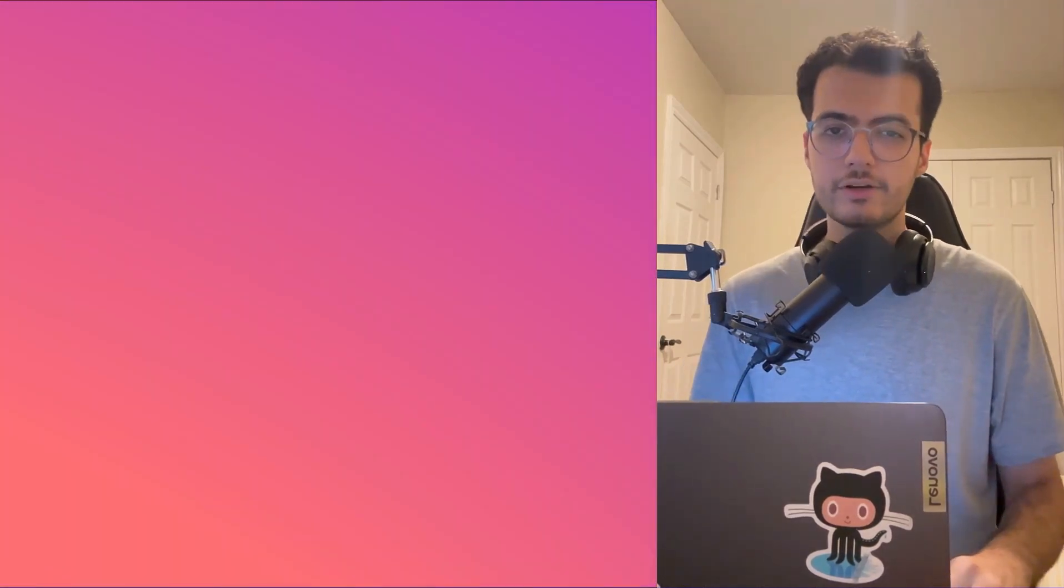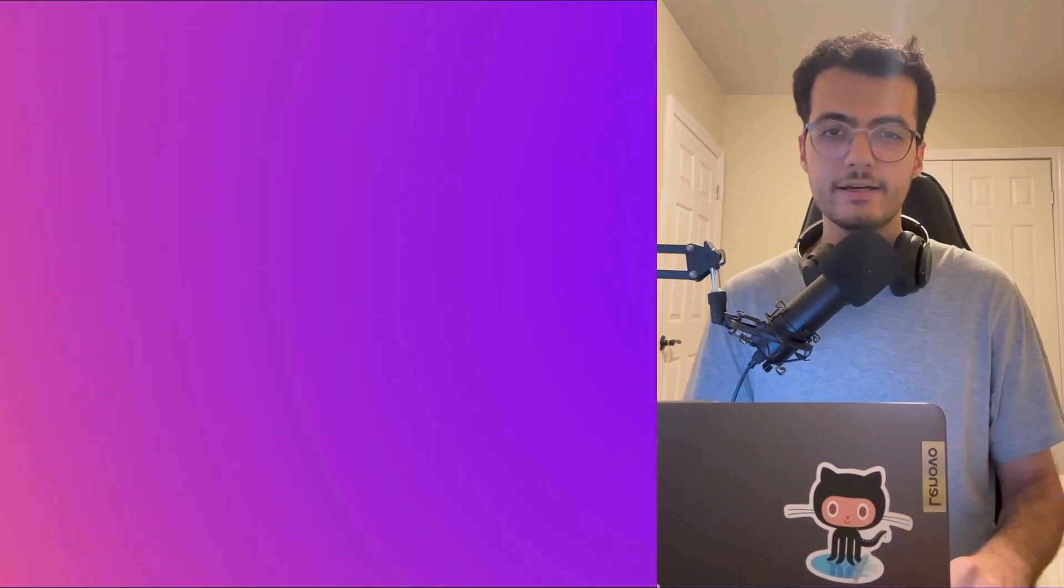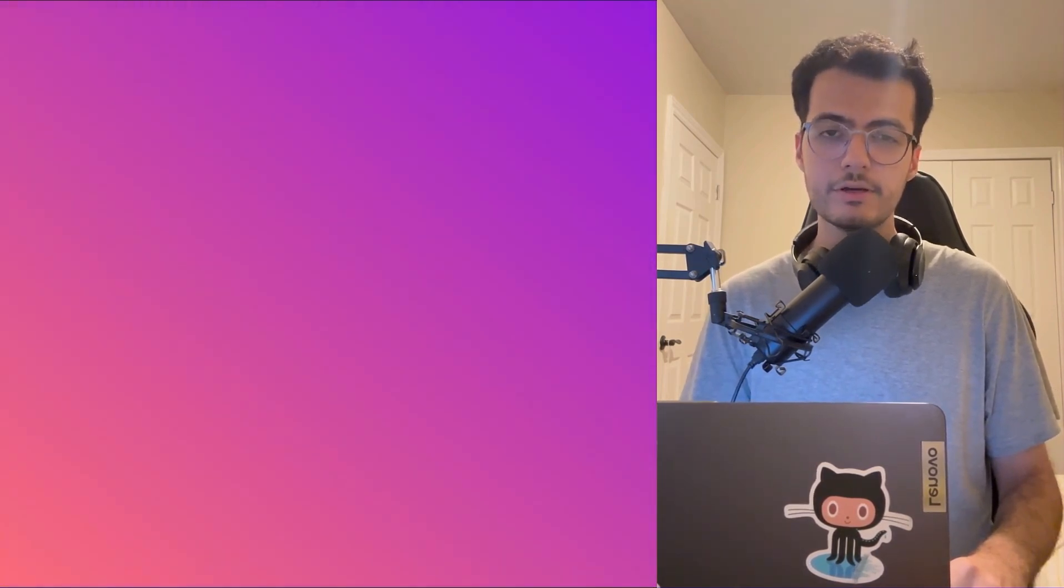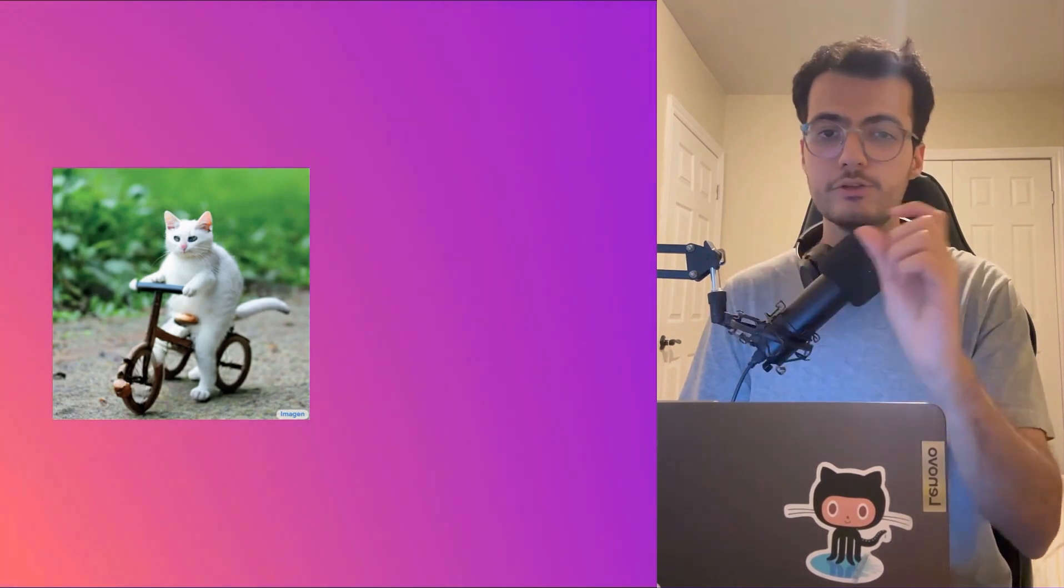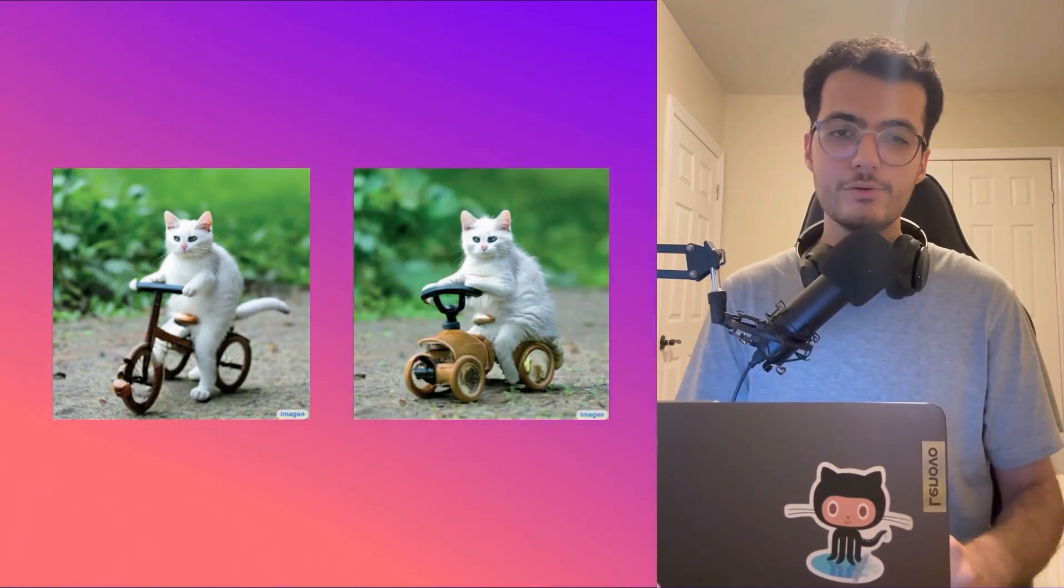Hello everyone, in this video let's talk about the prompt-to-prompt editing method that you can use to edit images generated from a diffusion model. Let's say you have an image of a cat riding a bicycle and you want to change the bicycle into a car.